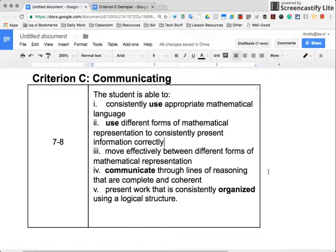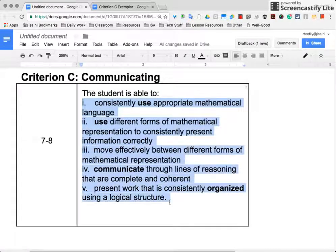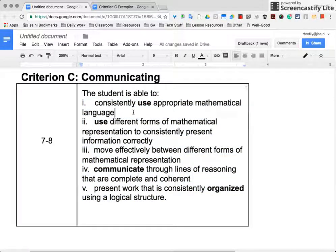We're going to talk about how to use the different criterion to make sure that you can score seven or eight on communicating, Criterion C, in mathematics. There are five things that you need to be able to do properly and do them really well. The first one is to consistently use appropriate mathematical language.